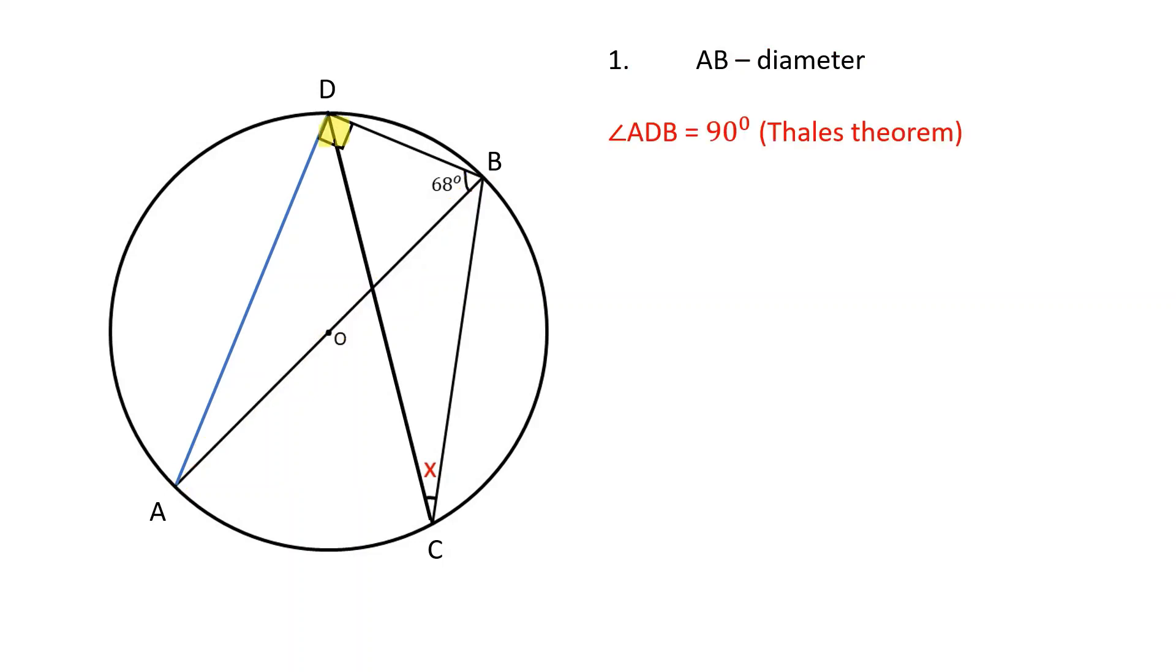Therefore, angle ADB is equal to 90 degrees, because the diameter of a circle always subtends a right angle to any point of the circle.